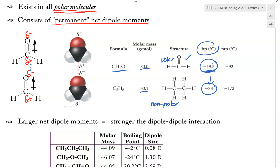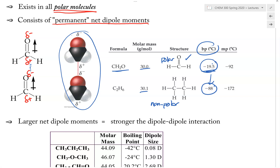The reason why this happened is because formaldehyde, in addition to the dispersion force, can also make the dipole-dipole force. This is why many molecules of formaldehyde are able to interact together very strongly, and therefore have a higher boiling point. The same applies to the melting point as well.